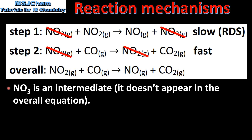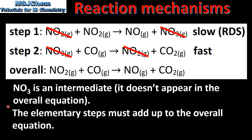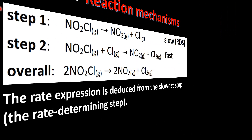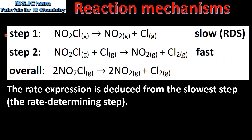In this reaction mechanism NO3 is an intermediate — it doesn't appear in the overall equation. As we've seen from the previous two examples, the elementary steps must add up to the overall equation. Next we'll look at how to deduce the rate expression from the reaction mechanism. The rate expression is deduced from the slower step, which is the rate determining step.